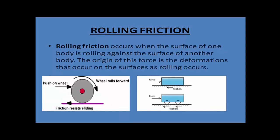Now let us define rolling friction. Consider this wheel — if I give it a small push, the wheel moves to the right, and there is a force acting in the opposite direction. This is called rolling friction because the wheel is rolling, not sliding. Rolling friction is always less than sliding friction. Rolling friction occurs when the surface of one body rolls against the surface of another, and its origin is the deformation that occurs on the surfaces as rolling happens.